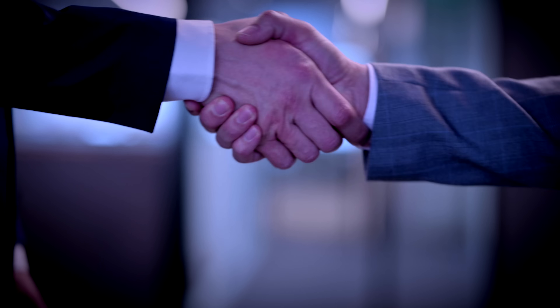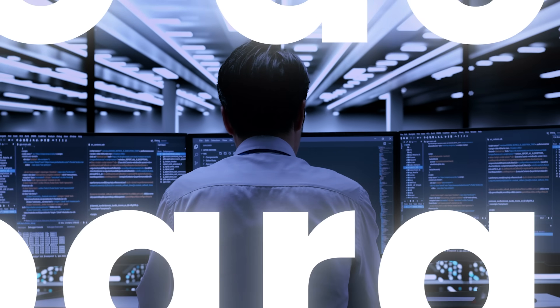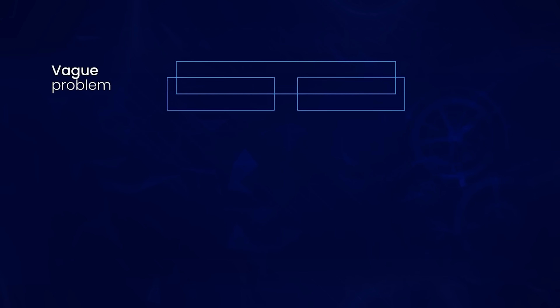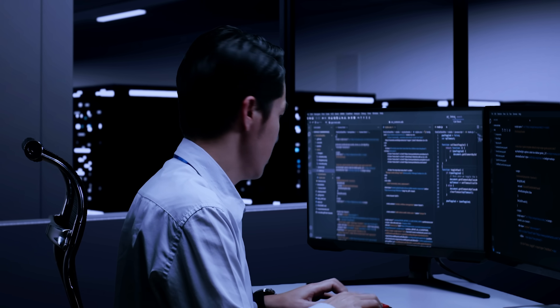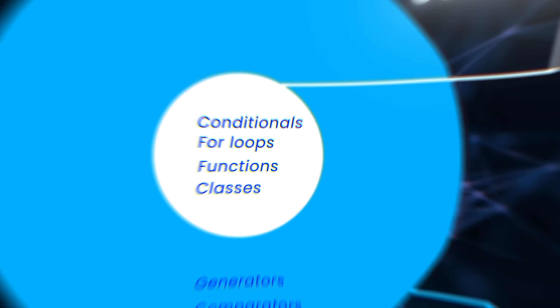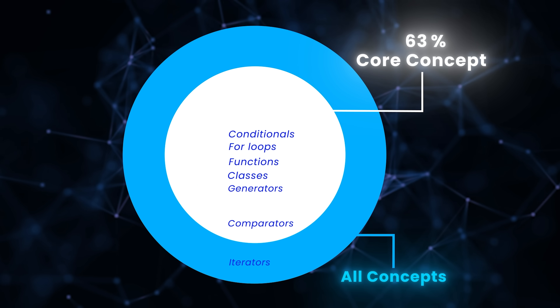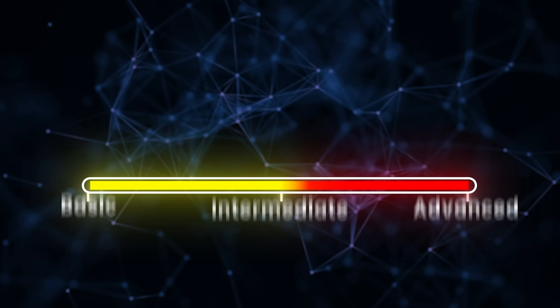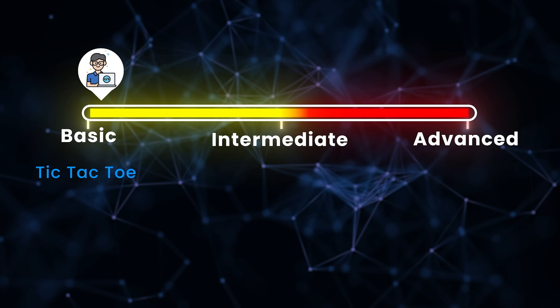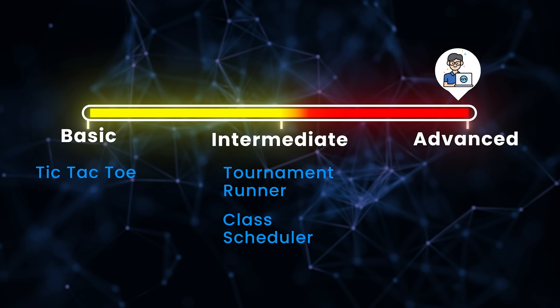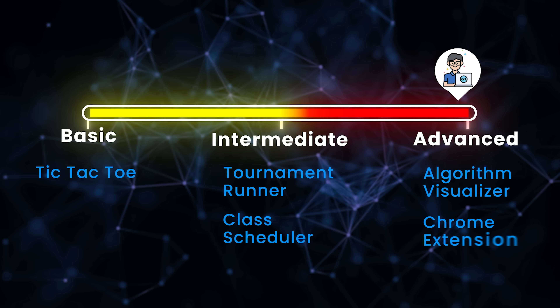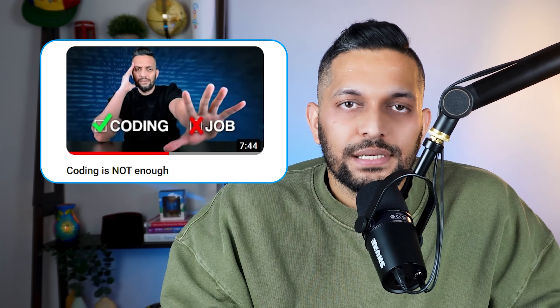Before talking about how to get a job, here's one important thing: so far, we've only learned a programming language — we still don't know how to program. To truly learn programming, you need to build the ability to take any complex problem, break it down into smaller sub-problems, and solve them using code. That's what software engineers do. The answer is practice. Start with something simple like a tic-tac-toe game, then move to intermediate projects like a tournament runner or a class scheduler. After that, build more complex projects like an algorithm visualizer or a Chrome extension for finding shopping deals.